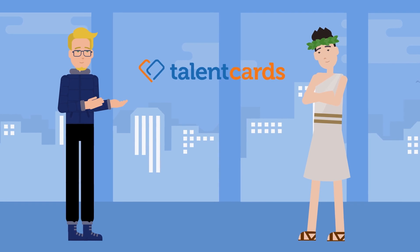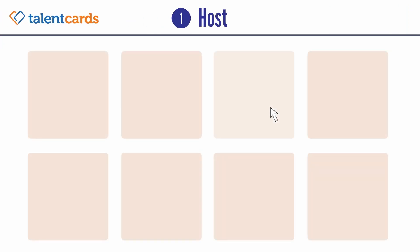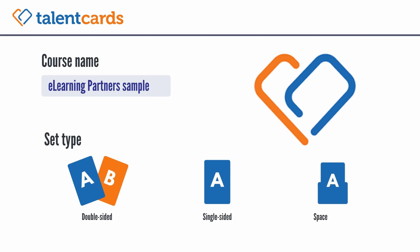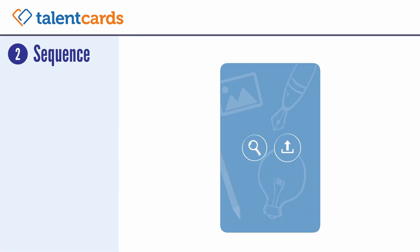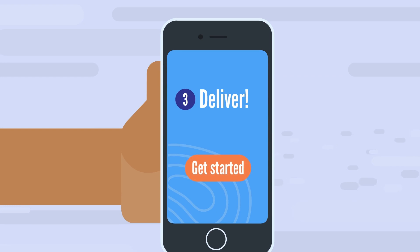Now let's dive into Talent Cards. In Talent Cards, your course is actually a card set. You can create a new card set, set your name, add subscription tags, and choose between double-sided or single-sided cards. Then you move on to sequencing — the order of the cards is the order your learners will ingest your content.